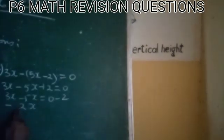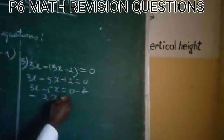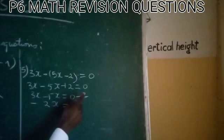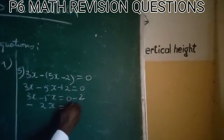3x minus 5x is equal to negative 2x, which is equal to 0 minus 2. We are still having negative 2.